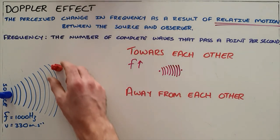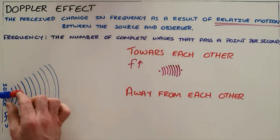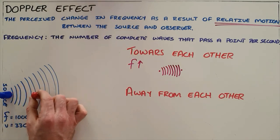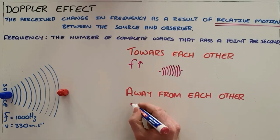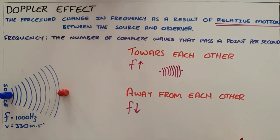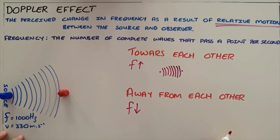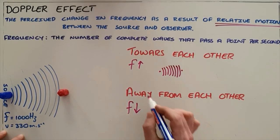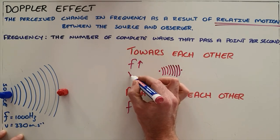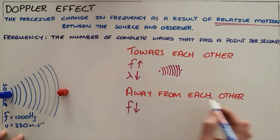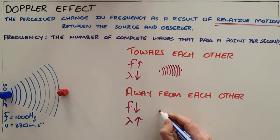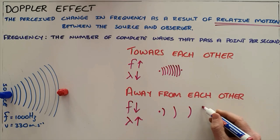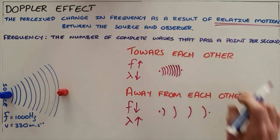By the same standard, if the source or observer move away from each other, the perceived distance between the waves increases, meaning fewer waves are detected per second, so the frequency decreases. Since the speed of sound in air is always constant at around 330 meters per second, for frequency to increase the wavelength must decrease, and when they move away from each other the wavelength must increase, meaning the waves appear to spread out between the source and observer as a result of the relative motion.